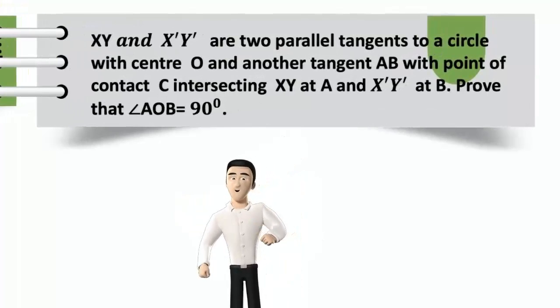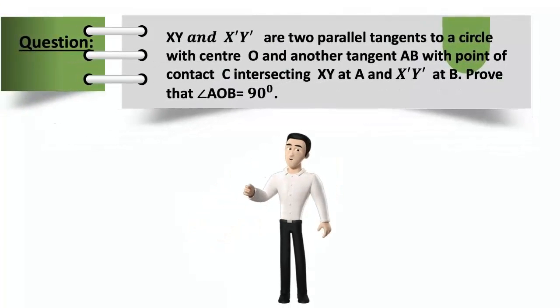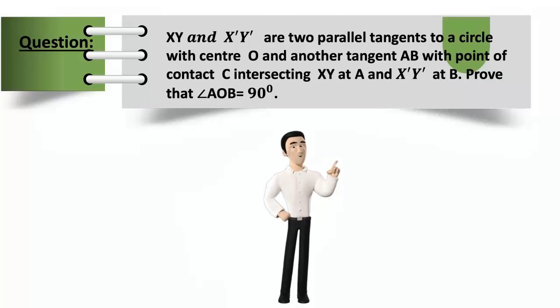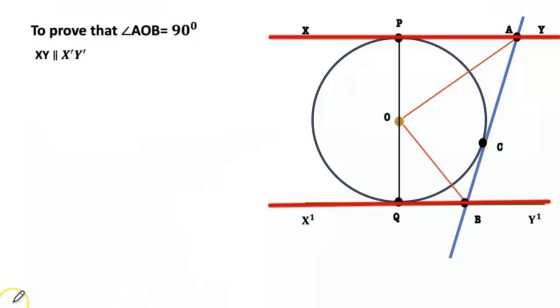XY and X'Y' are two parallel tangents to a circle with center O and another tangent AB with point of contact C intersecting XY at A and X'Y' at B. Prove that angle AOB equals 90 degrees. Let us see here, XY and X'Y' are parallel.